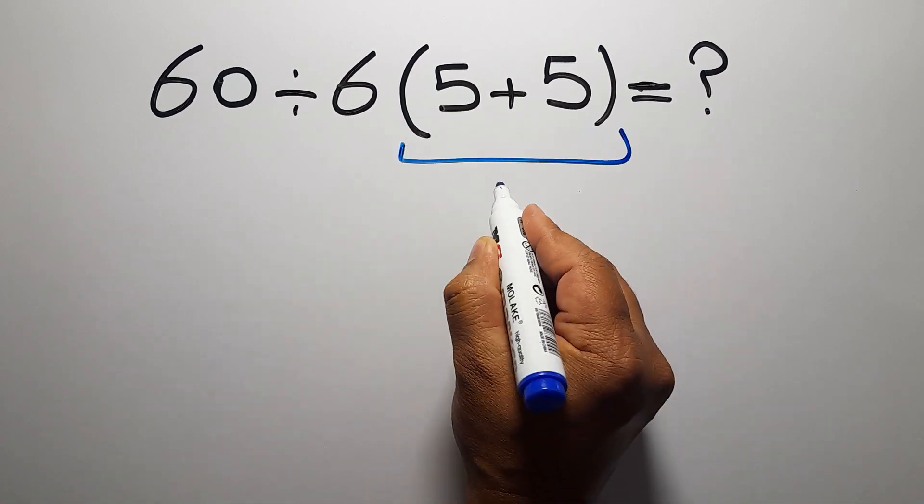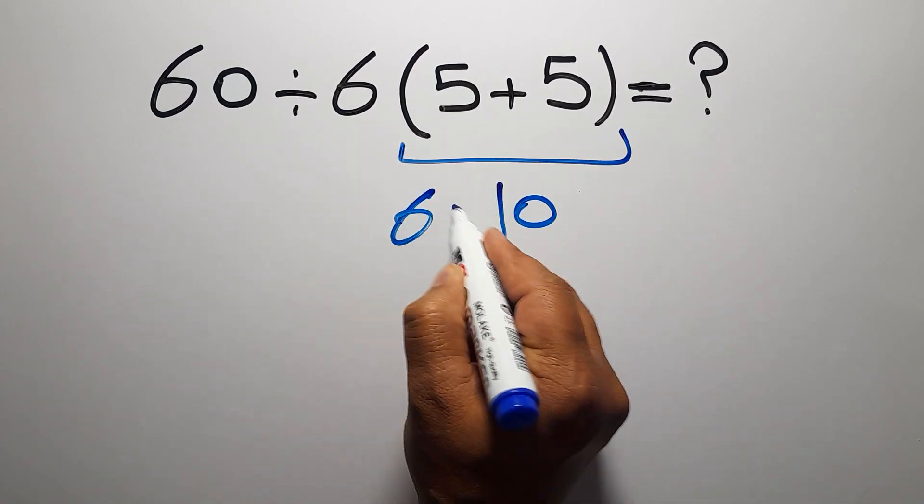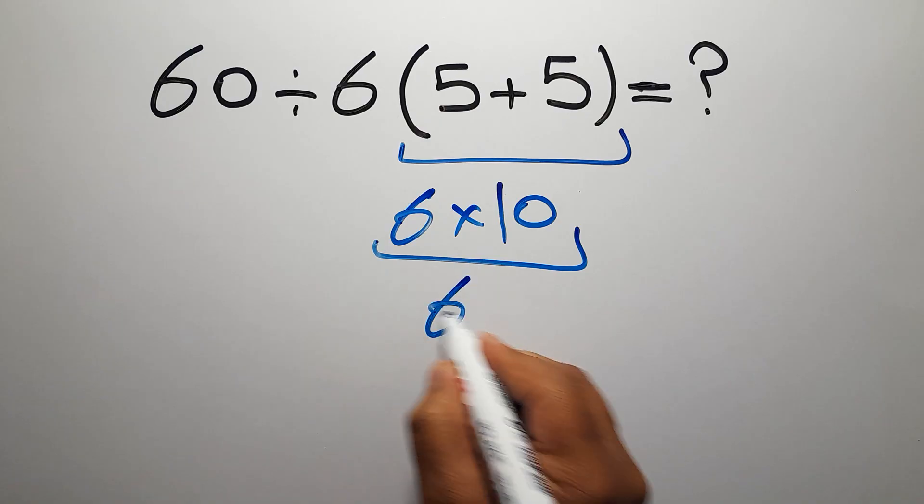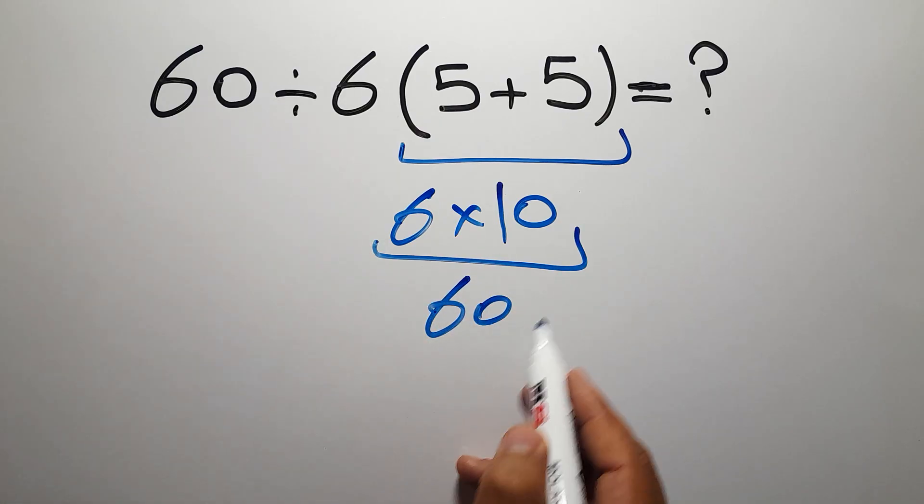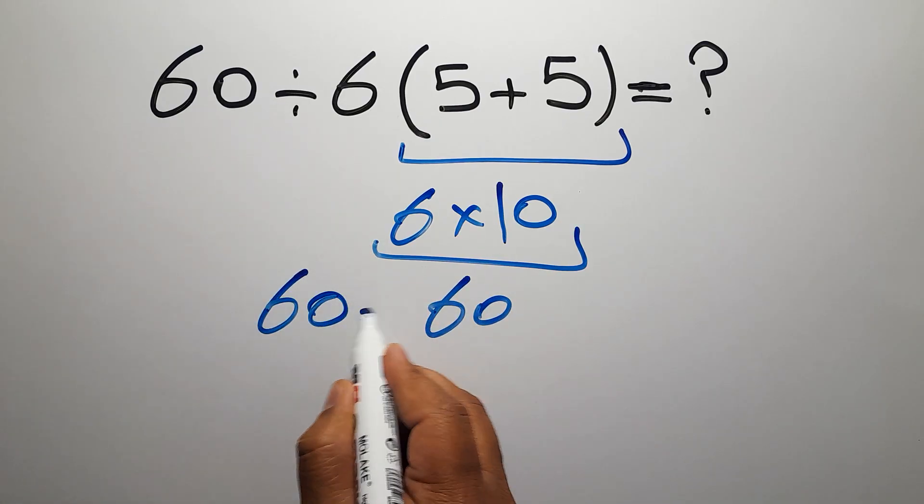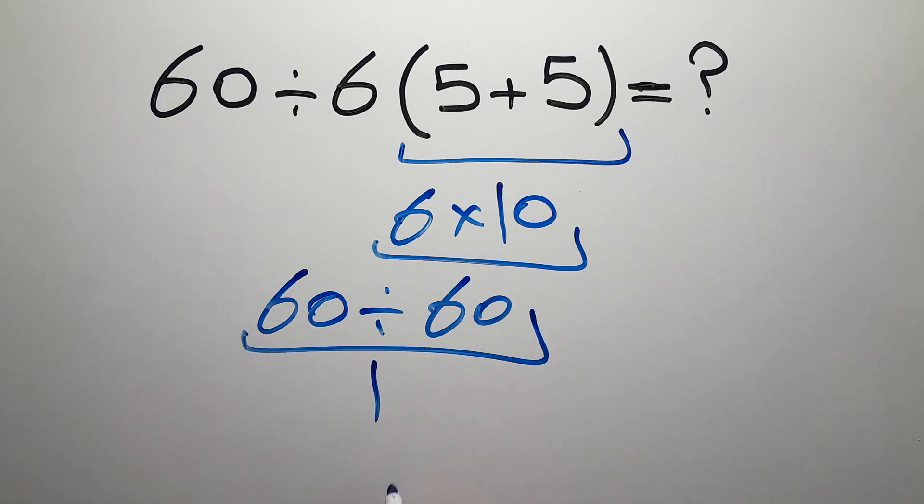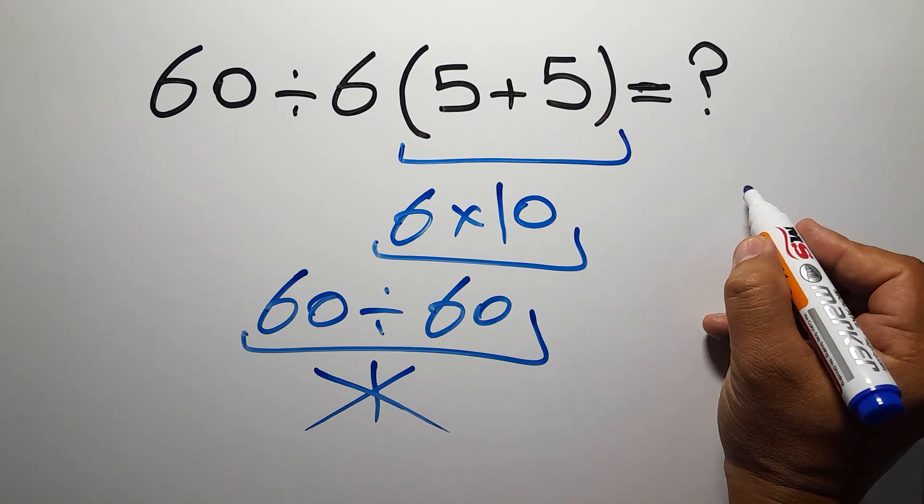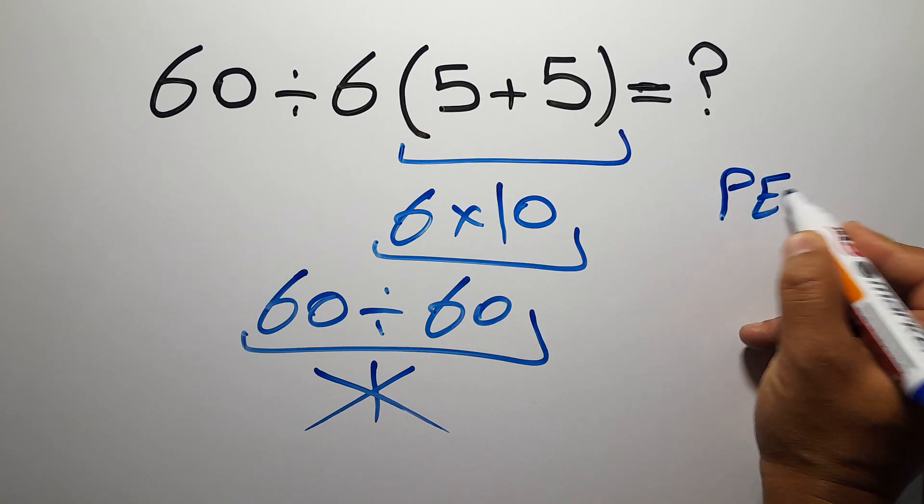5 plus 5 equals 10, so 6 times 10 equals 60, and 60 divided by 60 equals 1. But this answer is not correct because according to the order of operations, first we have to do parentheses, then exponents, then multiplication or division, and finally addition or subtraction.